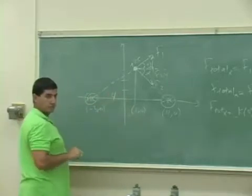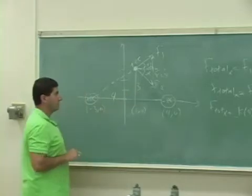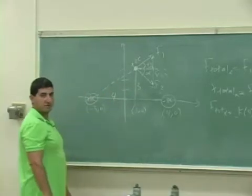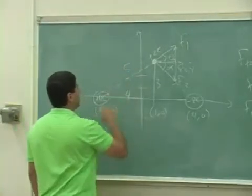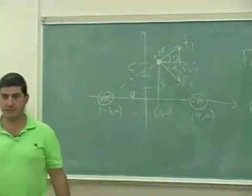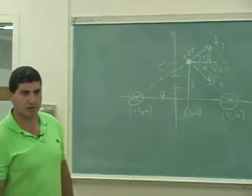So this distance is what? 4. What's this distance? 3. So what's this distance? Oh, that's good. It worked out to be a 3, 4, 5 triangle. So the distance between them is 5. So their distance squared, 5 squared.